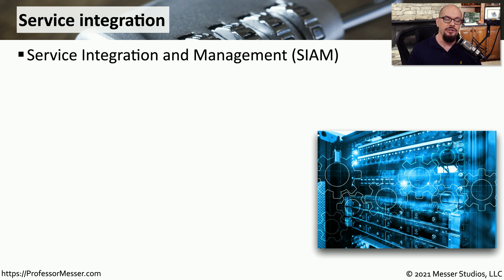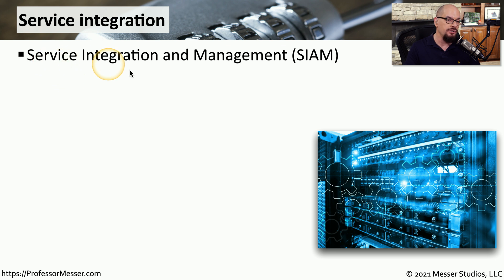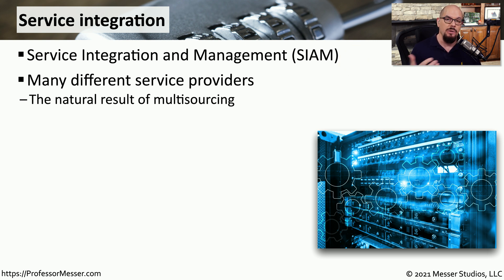Organizations rolling out these cloud services may be deploying services from multiple cloud providers simultaneously — some application instances in the Azure cloud, others in the Amazon cloud, and yet another set on the Rackspace cloud. There needs to be some way to consolidate the view of all of these different services into one single management interface. To do that, we use service integration and management, or SIAM. This is the natural next step when you begin deploying application instances to multiple providers. This is called multi-sourcing, and it ensures your application stays up and running regardless of the status of any individual cloud provider.